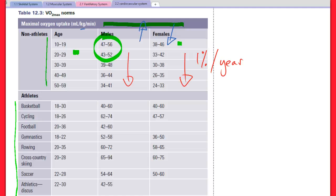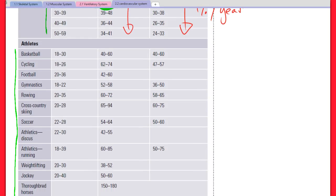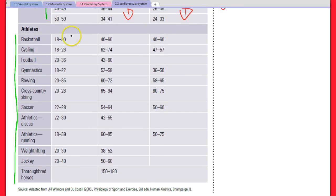I'm just going to bring it down so you can see all of the sports. So again, age, males, females. You may want to pause that and have a look at some of the values there.